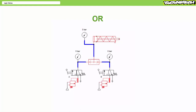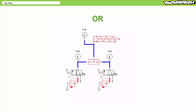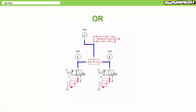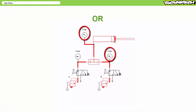When neither A nor B receive an air pilot signal, the OR valve produces no output. When only A receives an air pilot signal, the OR valve produces output. When only B receives an air pilot signal, the OR valve produces output. Finally, when both A and B receive an air pilot signal, the OR valve also produces output. You will note the OR valve selects the highest of the two pressures, notably B at 3 bar.